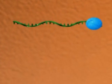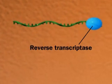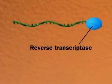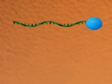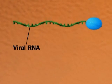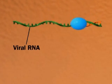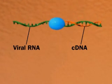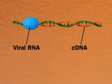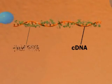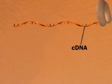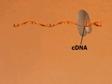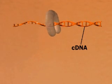Using reverse transcriptase brought in by the virus, the viral RNA makes a complementary cDNA. The viral RNA degrades, and the cDNA is the template for a second DNA strand.